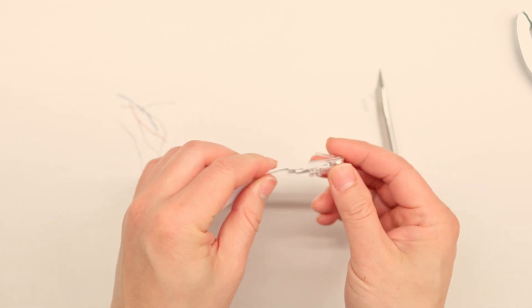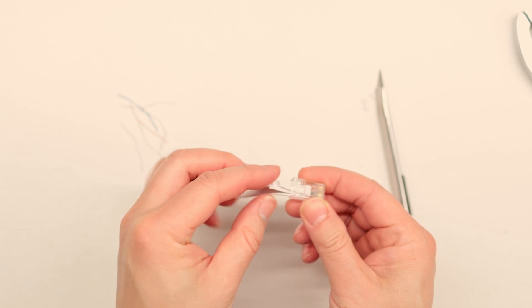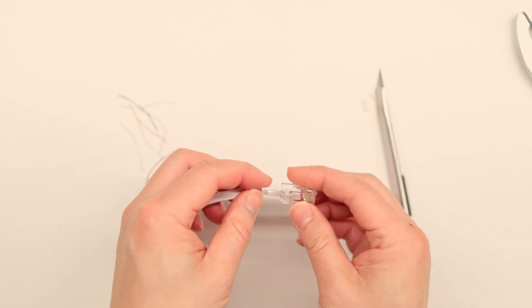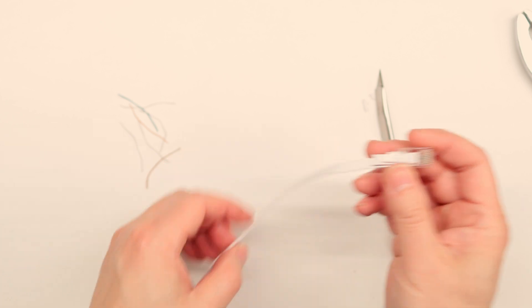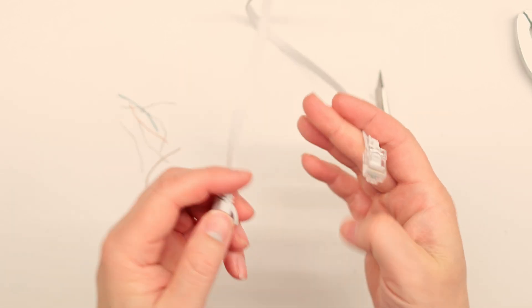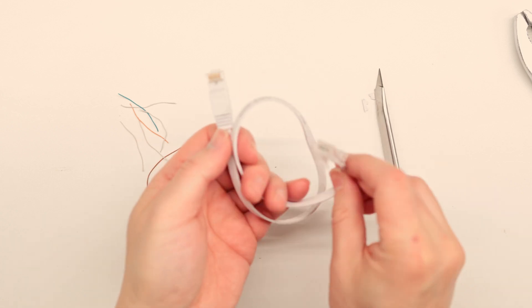There we go. It doesn't look pretty at the end, and it's okay if you want to make it nice and pretty. But for now, for demonstration purposes, I think it's fine. You can pull it out if you want, but it's not going anywhere. Now you have one perfectly working flat ethernet cable ready to go.